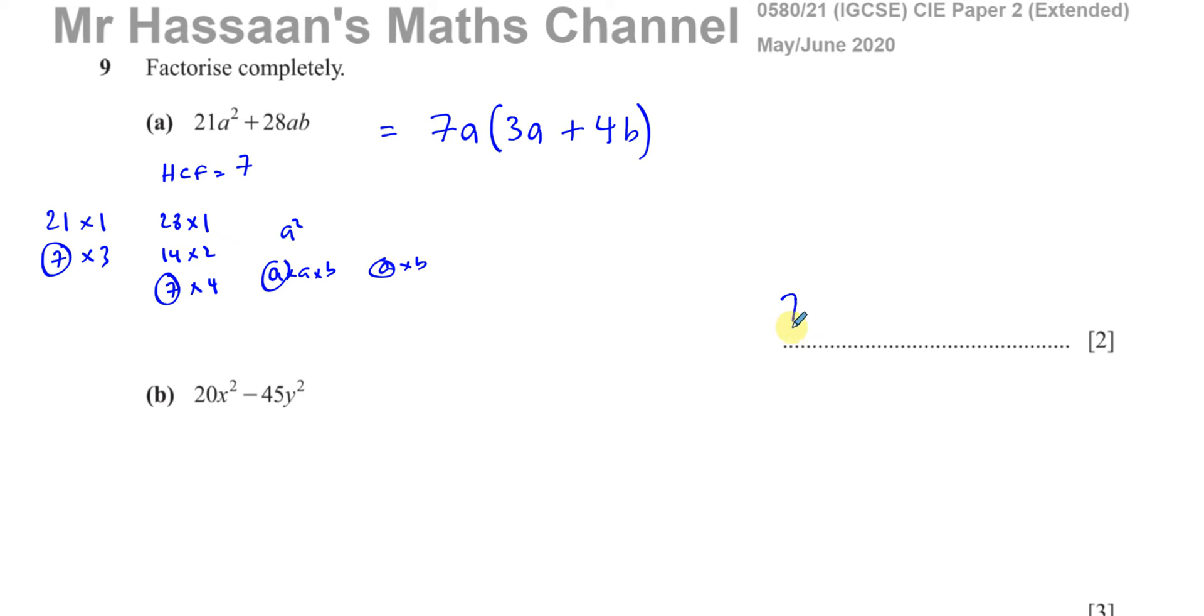So there we have the factorized form, completely factorized, taking out all the common factors, the highest factors from the letters and the numbers.